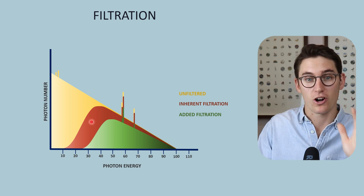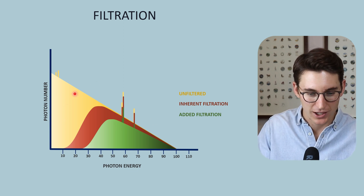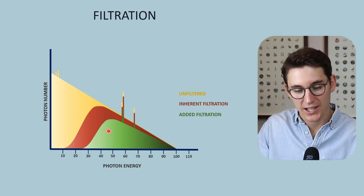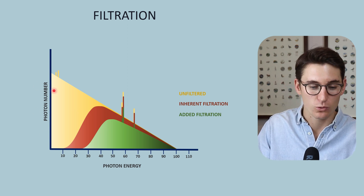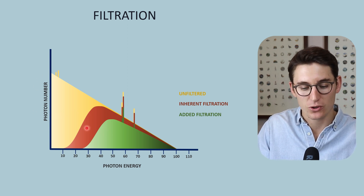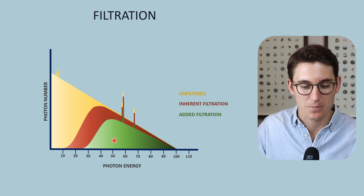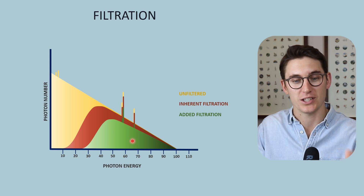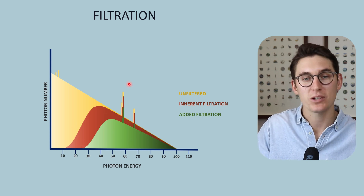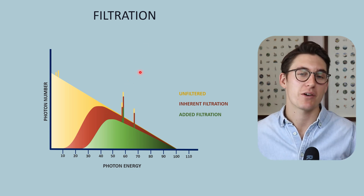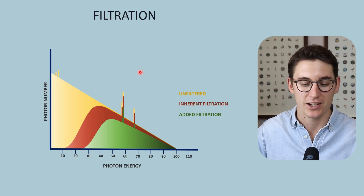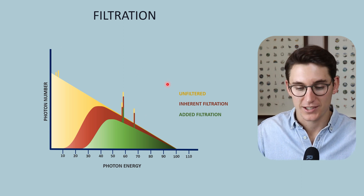Looking at the graph, an unfiltered spectrum, an inherent filtered spectrum, and an added filtered spectrum all result in sequentially fewer photons — we have decreased our x-ray beam quantity. Simultaneously, we have increased the average energy of each spectrum. As we filter our x-ray beam, we preferentially remove lower energy x-rays and increase the average energy of our x-ray spectrum.